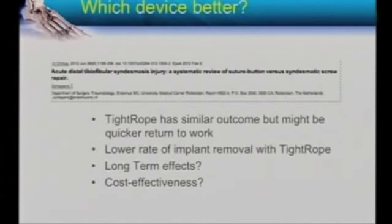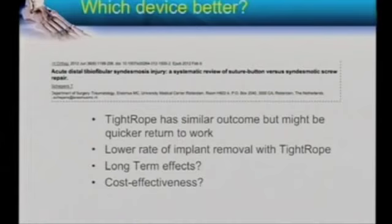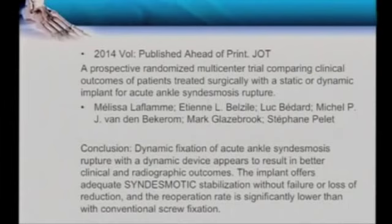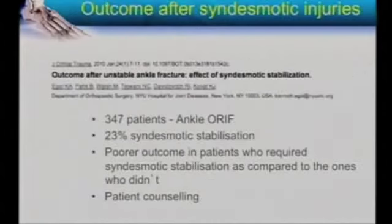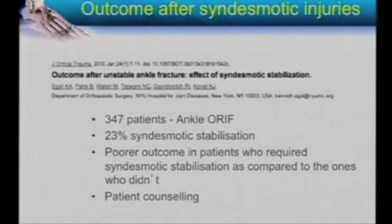Which device is better — the dynamic tightrope or the traditional static screw? We know there is a lower rate of implant removal with tightrope, outcomes are similar, and there may be a quicker return to work with tightrope. However, long-term effects of tightrope are unknown, and cost-effectiveness is uncertain given it is an expensive implant. Hot off the press: a level one study just published by Canadians suggests that syndesmotic fixation is better with tightrope, though the numbers are small. What we do know is that if your syndesmosis and ankle fracture are both injured, that patient is not going to do well. Tell them from day one that if the syndesmosis is broken, unfortunately the outcome will not be the same as a standard bimalleolar fracture.